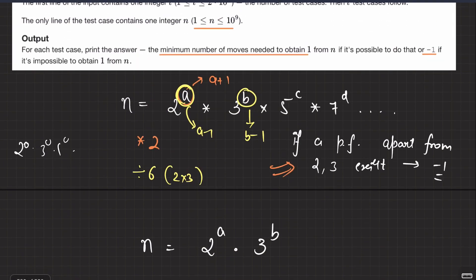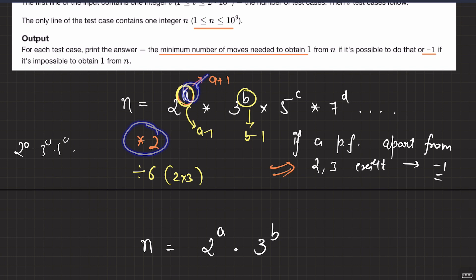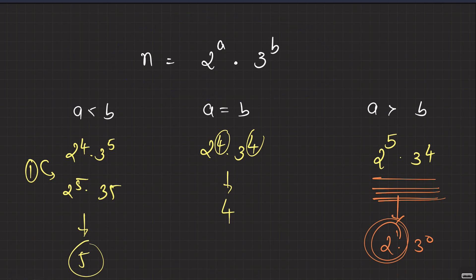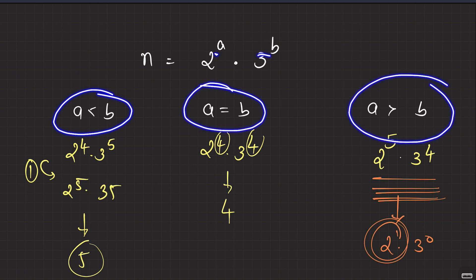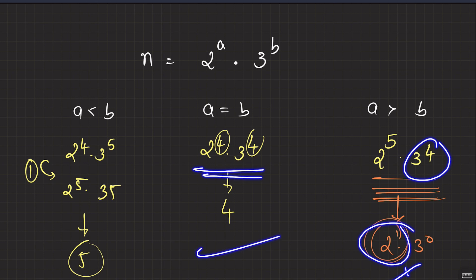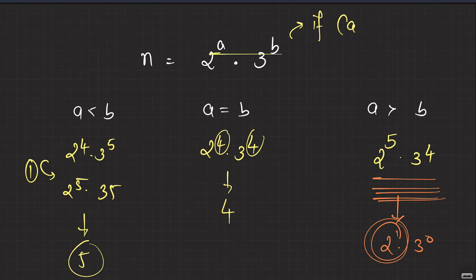To summarize: I used the prime factorization of n to get a bird's eye view. Multiplying by 2 increases the power of 2; dividing by 6 decreases both powers of 2 and 3. We have no way to control powers of other prime factors, so if any prime factor apart from 2 and 3 exists, we can never make the number 1. For n = 2^a × 3^b, the answer only exists if a ≤ b. The minimum operations are: (count3 - count2) multiply steps to match powers, then count3 divide-by-6 steps.